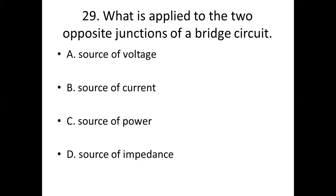29th bit. What is applied to the two opposite junctions of a bridge circuit? Option A: source of voltage. Option B: source of current. Option C: source of power. Option D: source of impedance. Answer: Option B, source of current.